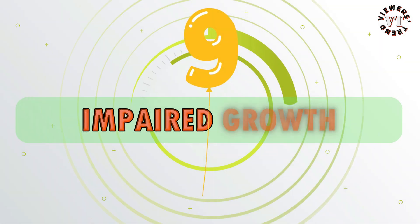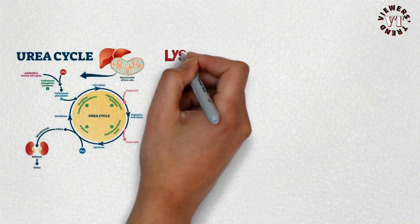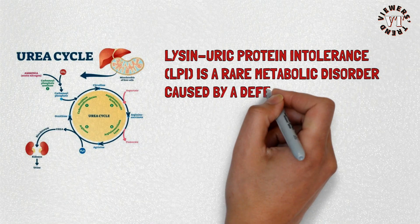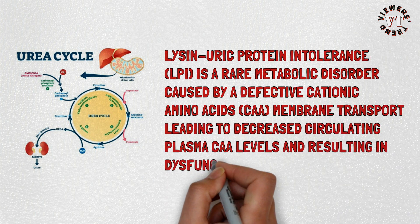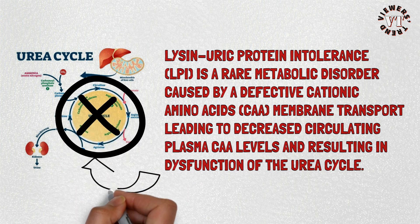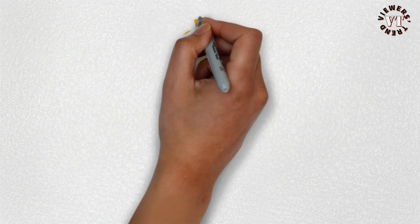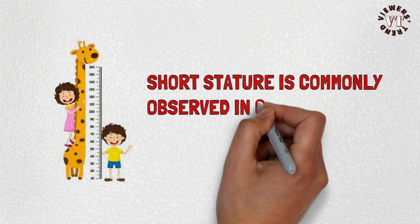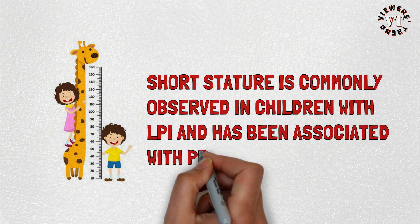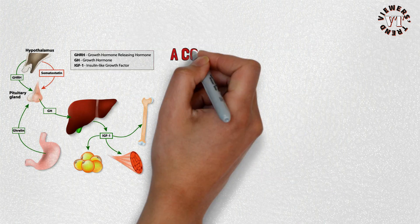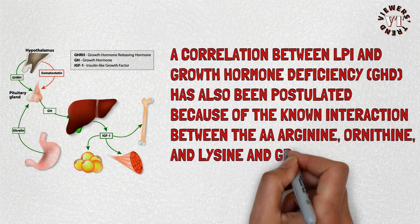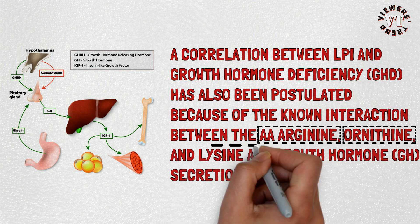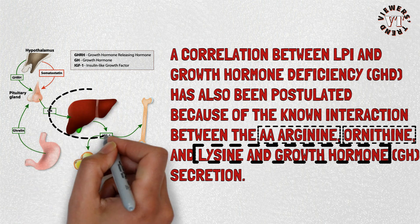9. Impaired Growth. Lysinuric Protein Intolerance (LPI) is a rare metabolic disorder caused by a defective cationic amino acid membrane transport, leading to decreased circulating plasma levels and resulting in dysfunction of the urea cycle. Short stature is commonly observed in children with LPI and has been associated with protein malnutrition. A correlation between LPI and growth hormone deficiency (GHD) has also been postulated because of the known interaction between the amino acids arginine, ornithine, and lysine and growth hormone (GH) secretion.